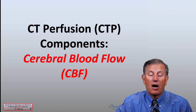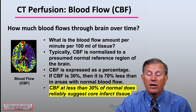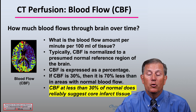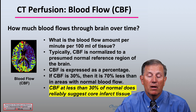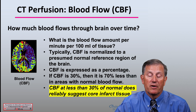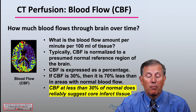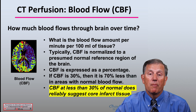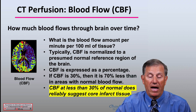Regarding cerebral blood flow, you ask: how much blood flows through the brain over time? What is the blood flow amount per minute per 100 mls of tissue? Typically, cerebral blood flow is normalized or compared to a presumed normal reference region of the brain on the other side. CBF is expressed as a percentage. If CBF is 30% in an infarct-related region, then it is 70% less than in areas with normal blood flow. A cerebral blood flow at less than 30% of normal does reliably suggest a core infarct tissue area. The heavy blue area on this scan would suggest a large core infarct because cerebral blood flow is dramatically diminished related to the presence of the clot in a cerebral vascular area.